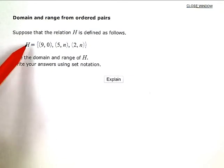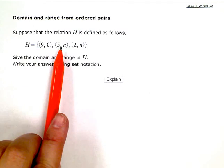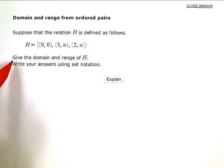So there's the H, it's equal to, and I have three ordered pairs here. Give the domain and range of H. Write your answers using set notation.